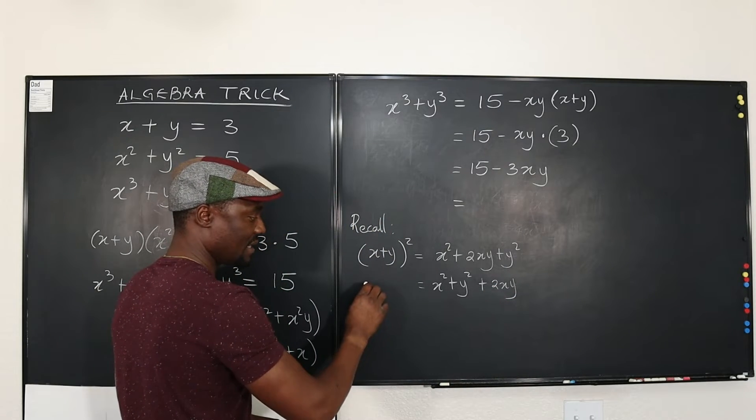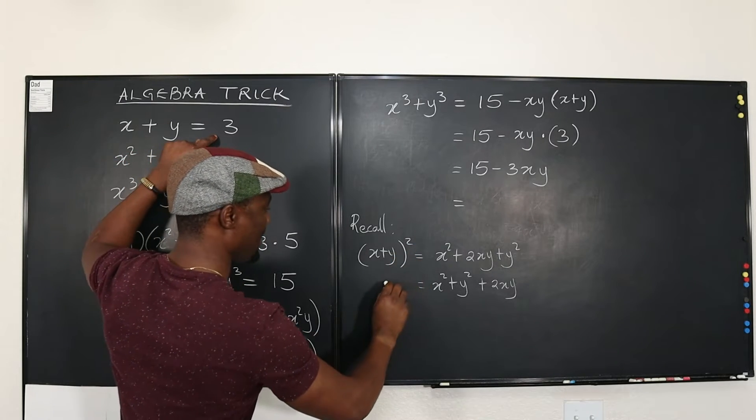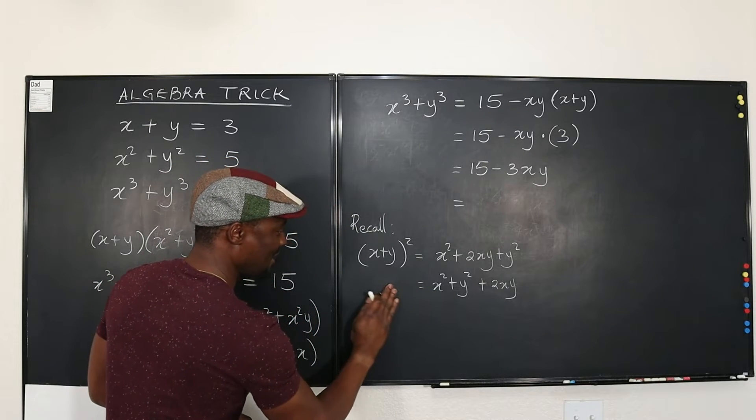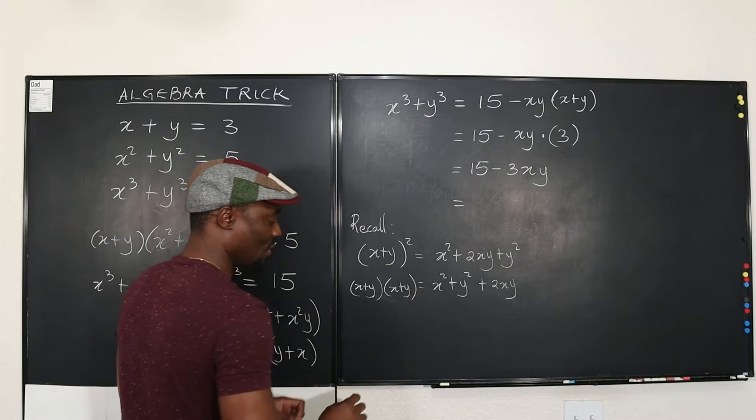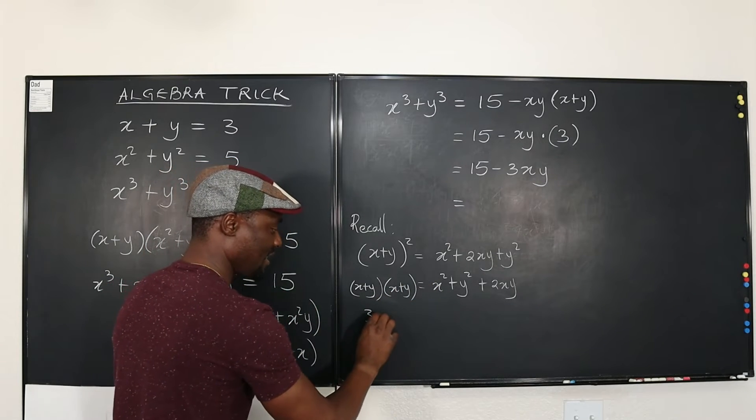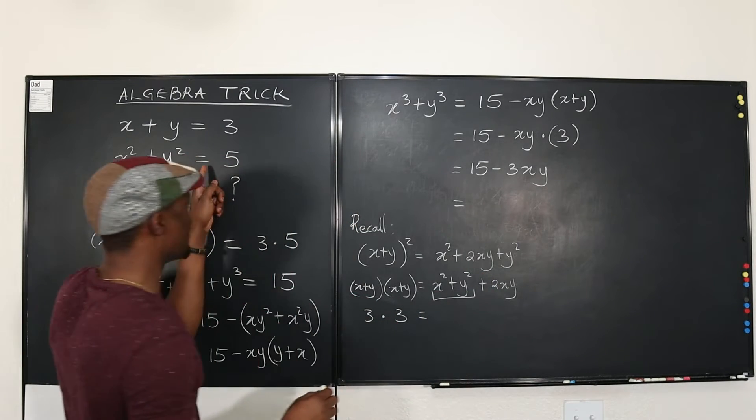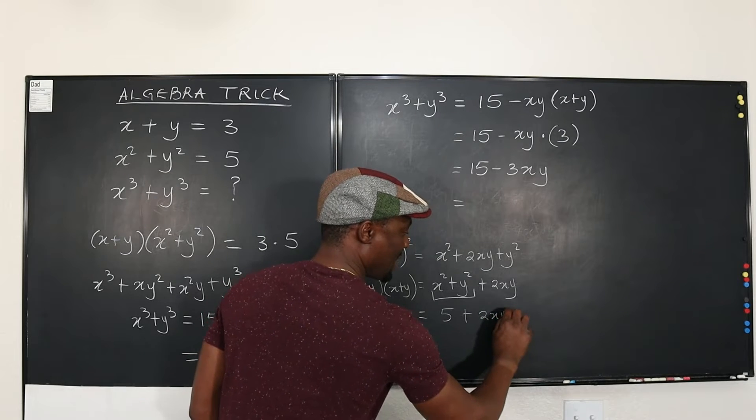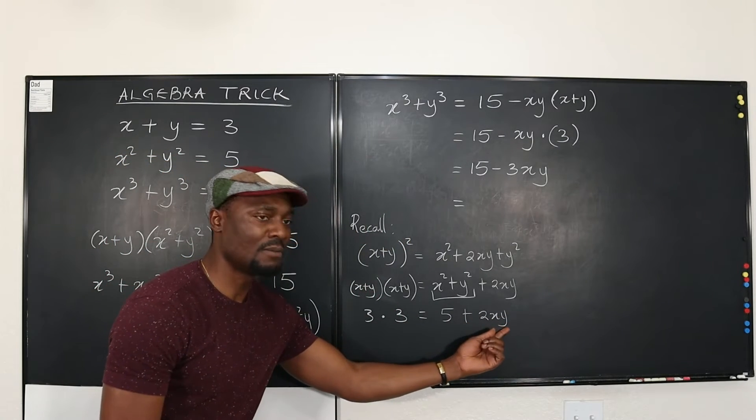And what is X + Y? It's three. So three squared equals, let me rewrite it. So this is going to be (X + Y) times (X + Y). Okay? So this is X + Y. That's three times three equals, what is this? It's given. It's five plus 2XY. So we have nine equals five plus something.